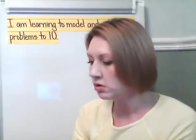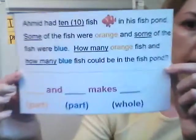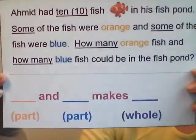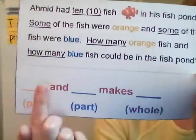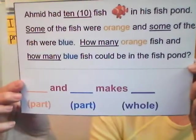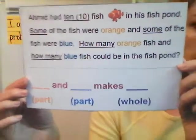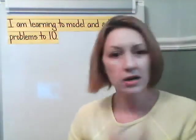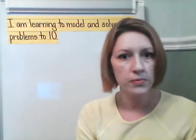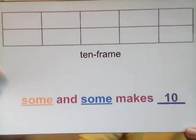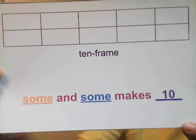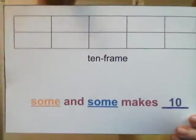What I'd like to do is show you what we're going to be doing with this problem. We have one part and another part that makes the whole. I know there are going to be 10 fish, but I wonder how many orange and how many blue. Is there a combination to 10 that you thought of? We're going to use a ten-frame to help us out as our model. Some and some makes 10 — some orange and some blue makes 10.